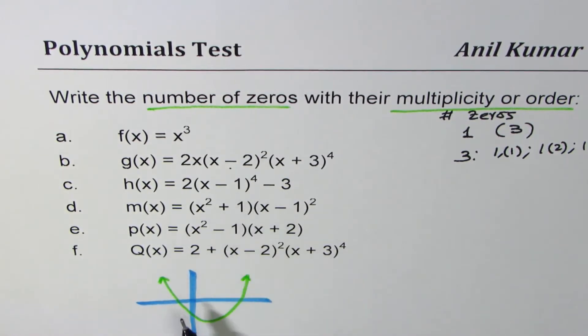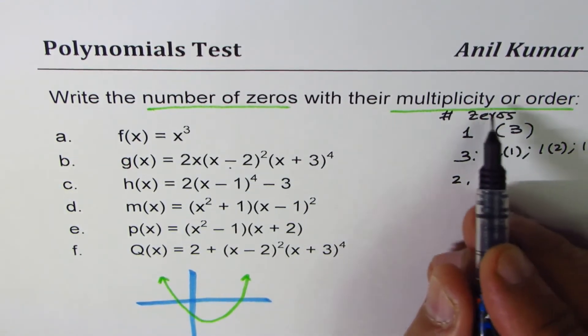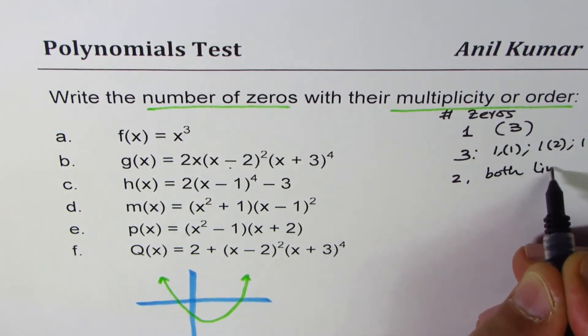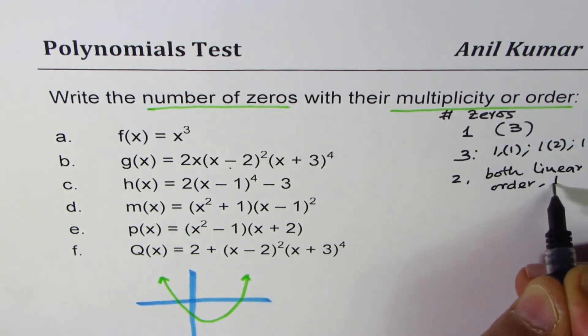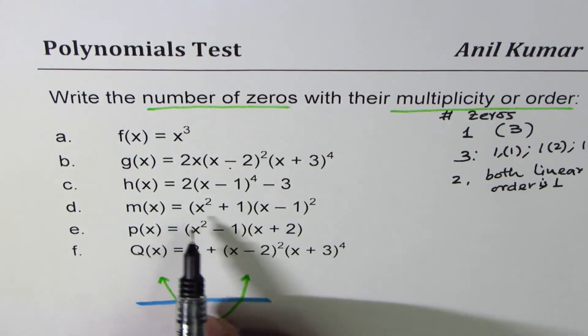So that will result into two zeros, each linear. So number of zeros is two and both are of order one, both linear, that means order is one.